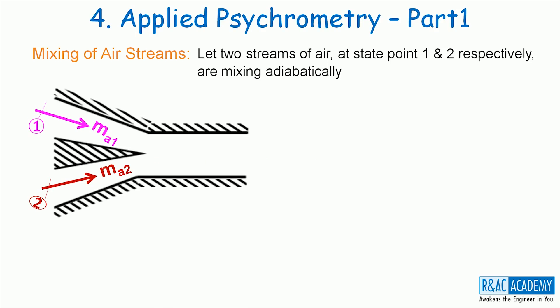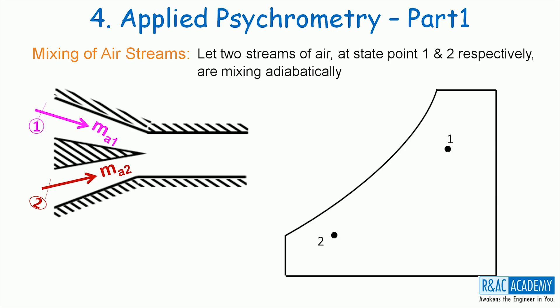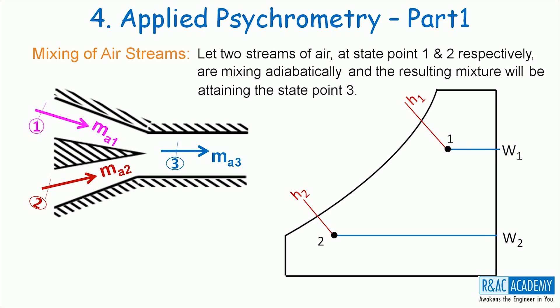Let two streams of air at state point 1 and 2 respectively be mixing adiabatically. Let MA1 and MA2 be the masses of dry air in stream number 1 and stream number 2 respectively. Let us now plot these two states on the psychrometric chart. W1, H1 and W2, H2 are the properties corresponding to the state points 1 and 2. The resulting mixture attains state point 3, and the state point 3 will be lying on the line joining the state points 1 and 2 on the psychrometric chart.